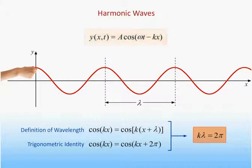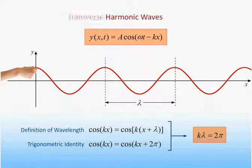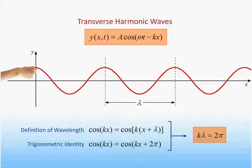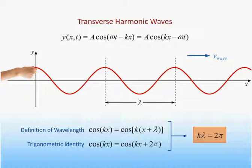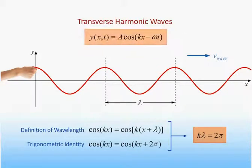We have now obtained the general expression for the displacement of a transverse harmonic wave on a string traveling along the positive x-direction. It is customary to swap the order of the two terms in the argument of the cosine so that the term containing x comes first.